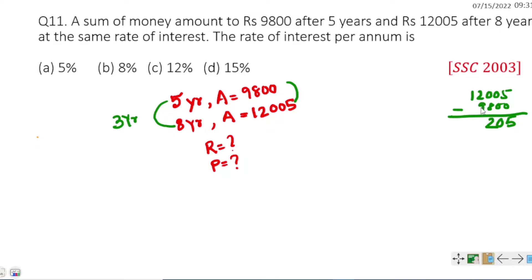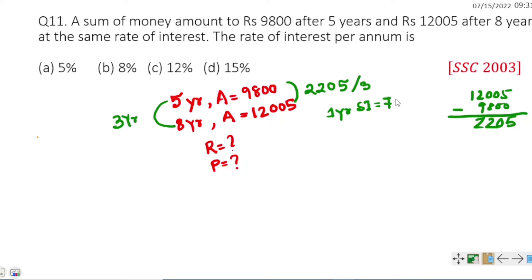The simple interest for the period is: 12005 minus 9800 equals 2205. Dividing 2205 by 3 (the difference in years) gives 735 — so the simple interest per year is 735.